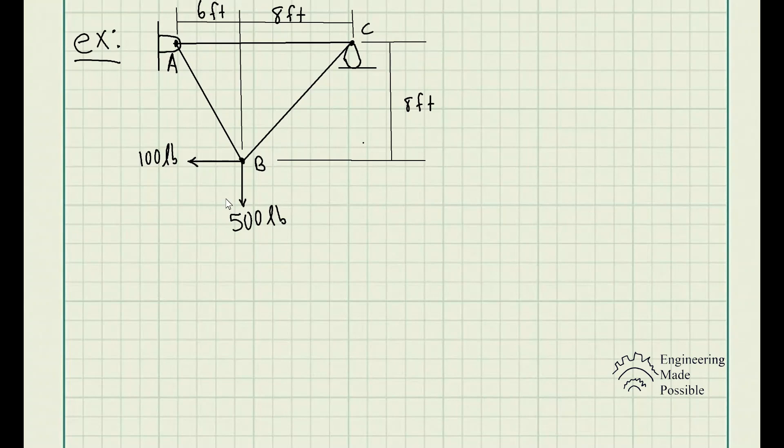The problem statement says: determine the force on each member of the truss and state if the members are in tension or compression. We have two forces being applied at point B — a 100-pound horizontal force and a 500-pound vertical force applied to point B.